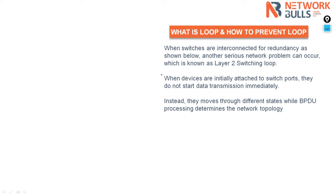Hello, in this video we will discuss what is a loop and how to prevent it, and how spanning tree comes into picture. Whenever we connect switches in a redundant way, it means that you are connecting switch one to switch two, switch two to switch three, and switch three again to switch one.